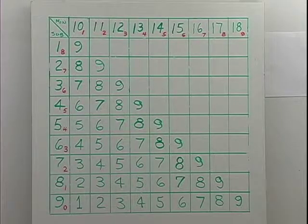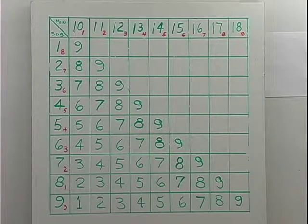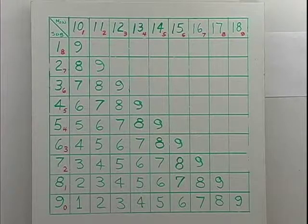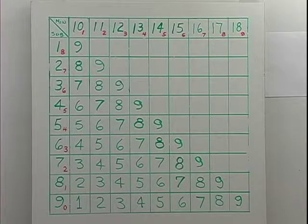I'll put a 9. 12 minus 3, 3 and 6 are 9. 18 minus 9, 9 and 0 is 9. So it looks like this whole diagonal is all 9's. 15 minus 6, 6 and 3 is 9, so it is.